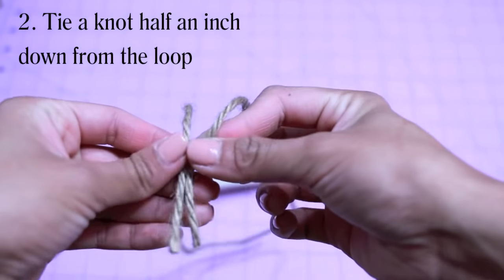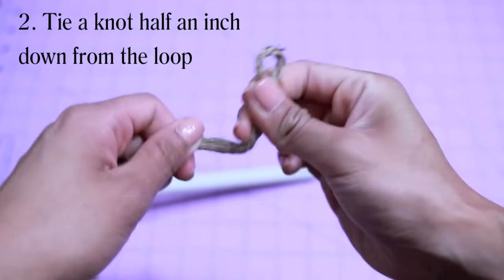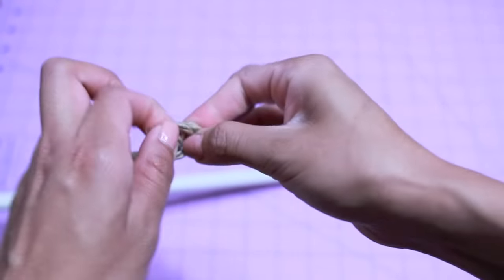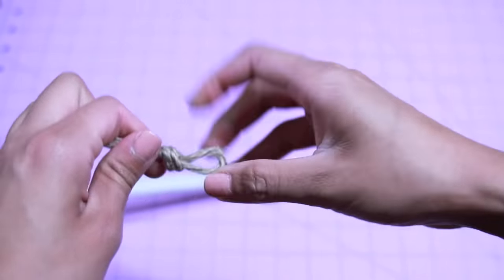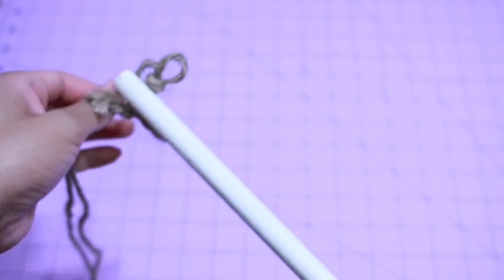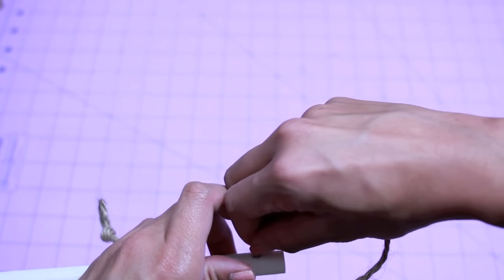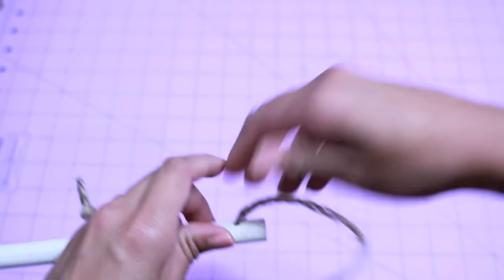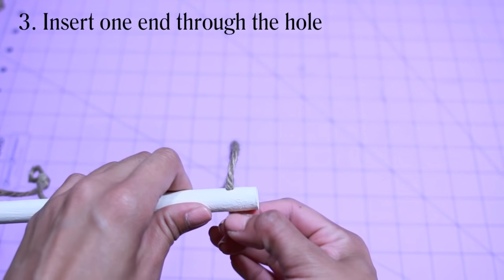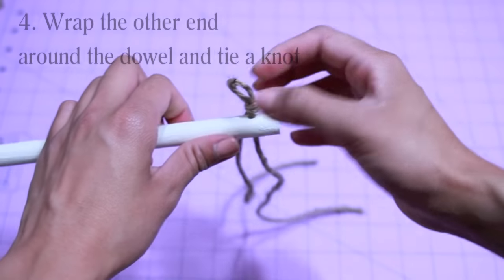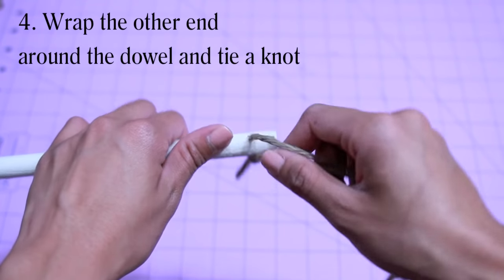Grab a piece of twine and tie a knot half an inch down from the loop. This is how you're going to be hanging your rod on the wall. Make sure that both sides have the same size of loop. Now to attach this into the rod, insert one end through the hole and wrap the other end around the dowel and tie a knot.